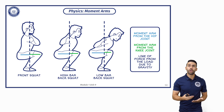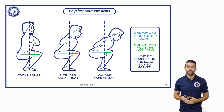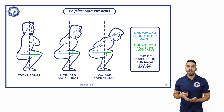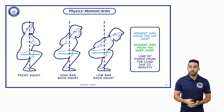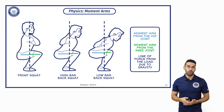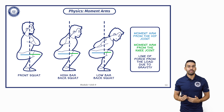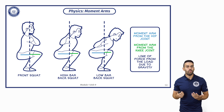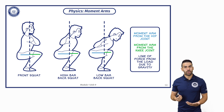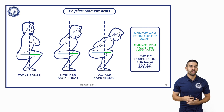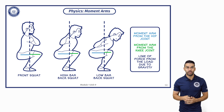Our green line is going to be the moment arm from our knee. With a front squat, we're going to have a much greater moment arm on our knee joint than we would with the high bar or the low bar back squat. This means that the demands on that joint increase. The muscles that control our knee joint are the quads, so quad activation is going to be much greater in the front squat than in the back squat.